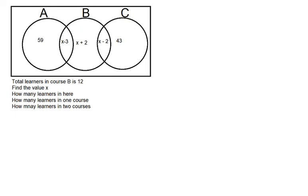Hello everybody, today I will talk about Venn diagrams. We have circles A, B, and C with values 59, x-3, x+2, x-2, and 43. The questions ask: find the value of x, how